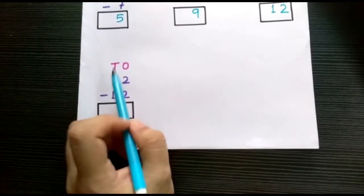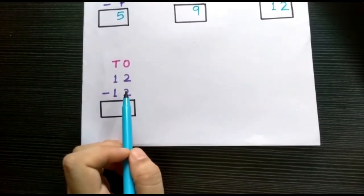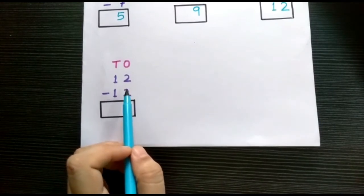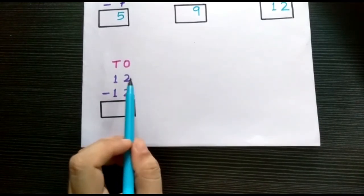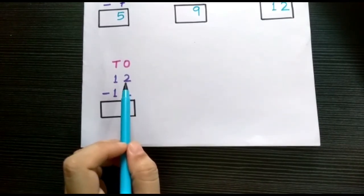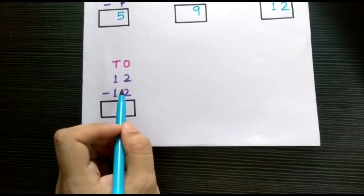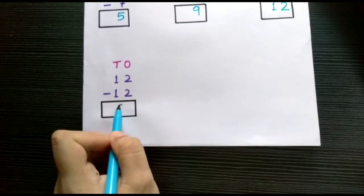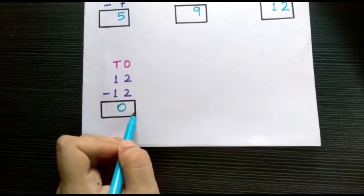In the last example we have 12 minus 12. Children, if we subtract the same numbers the answer will always remain 0. So children, 12 minus 12 is 0.